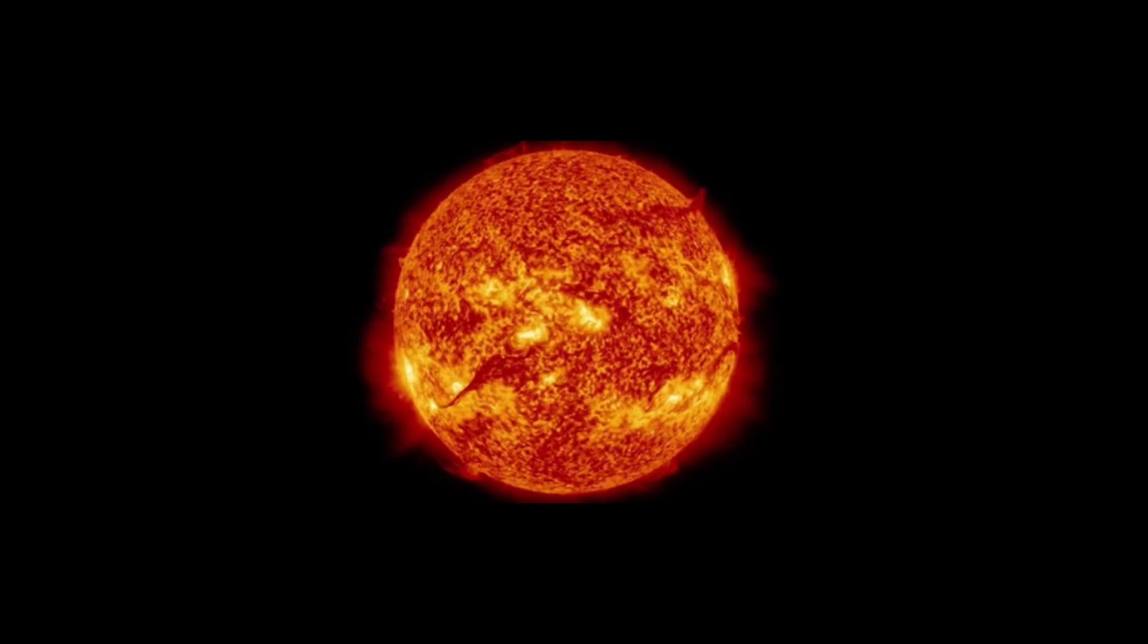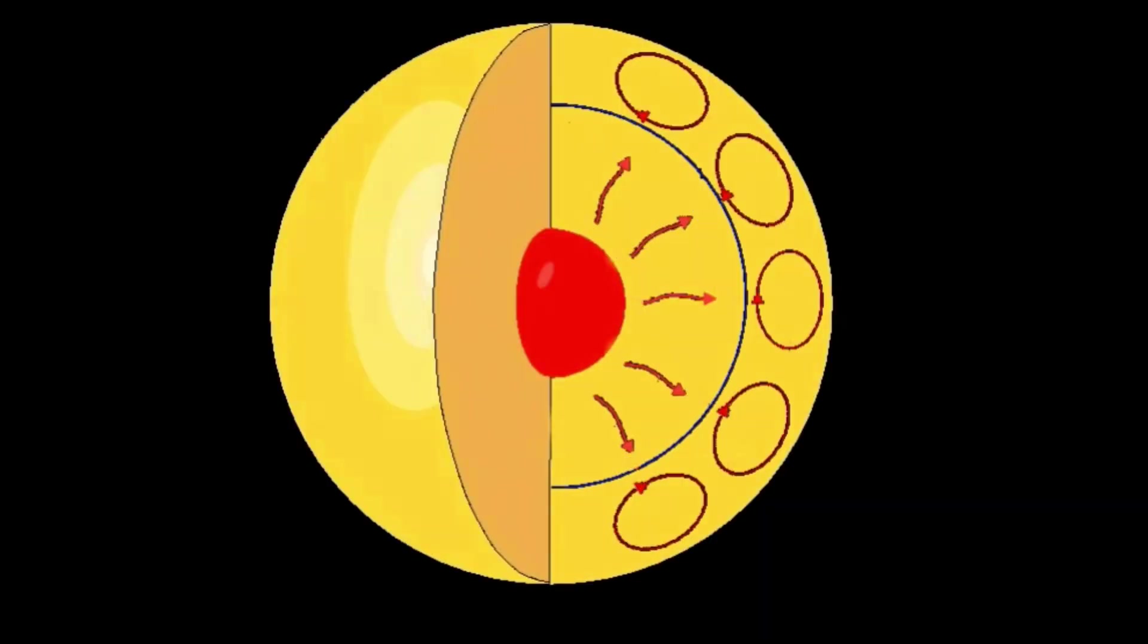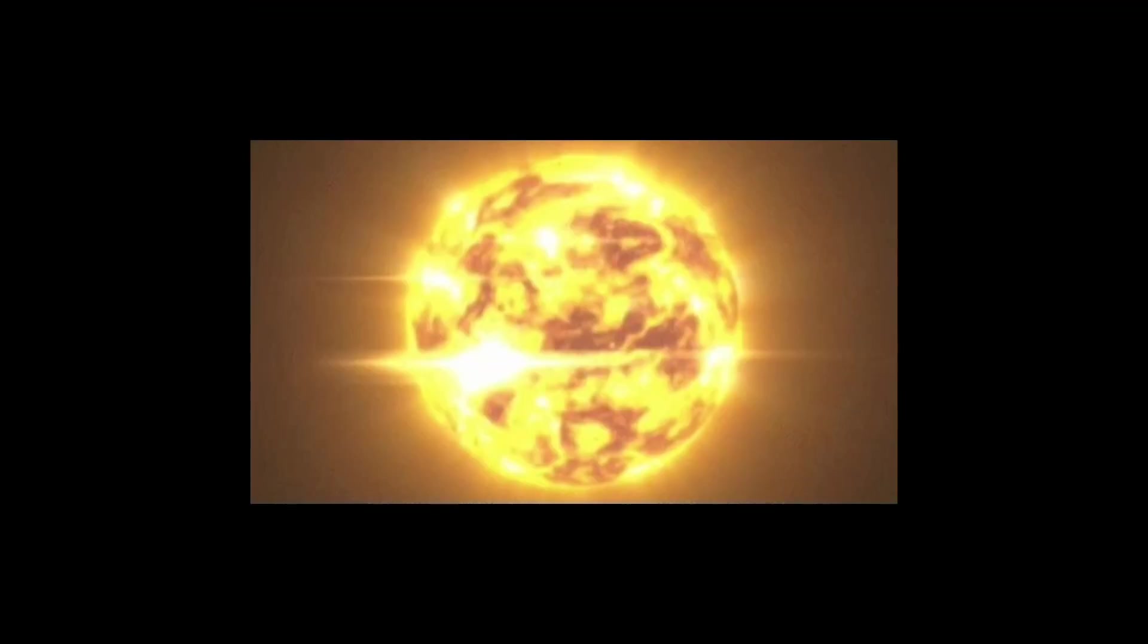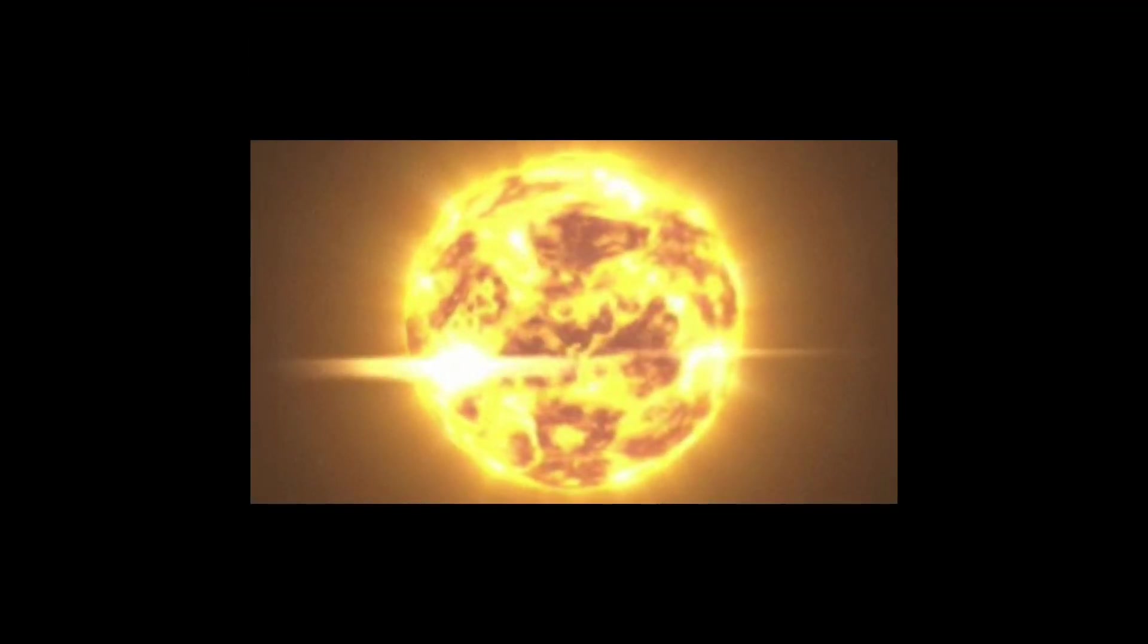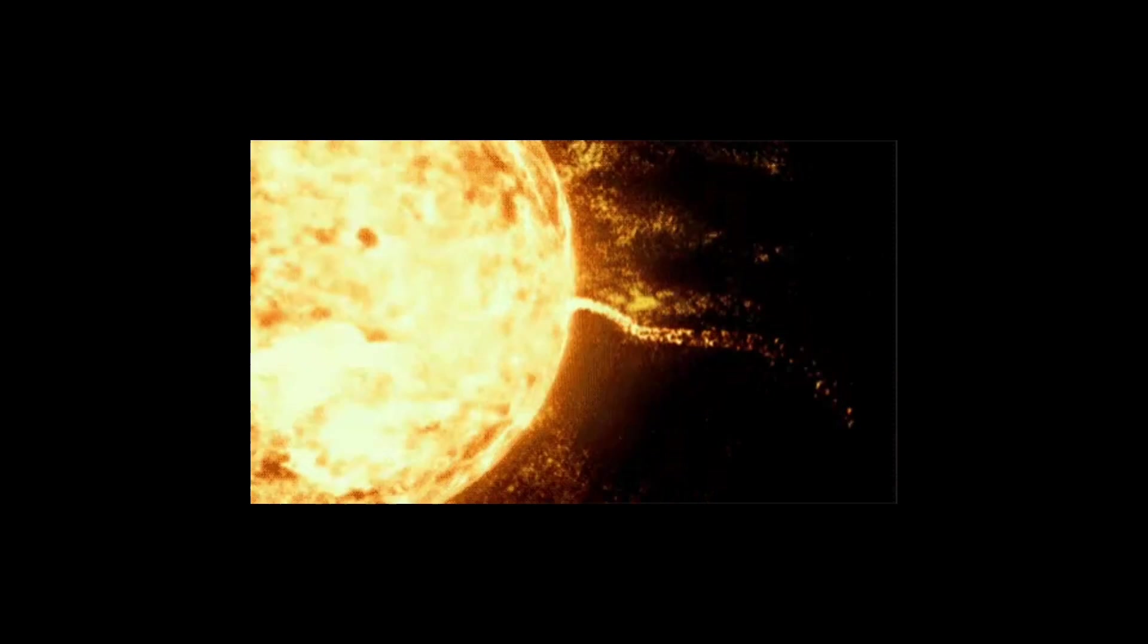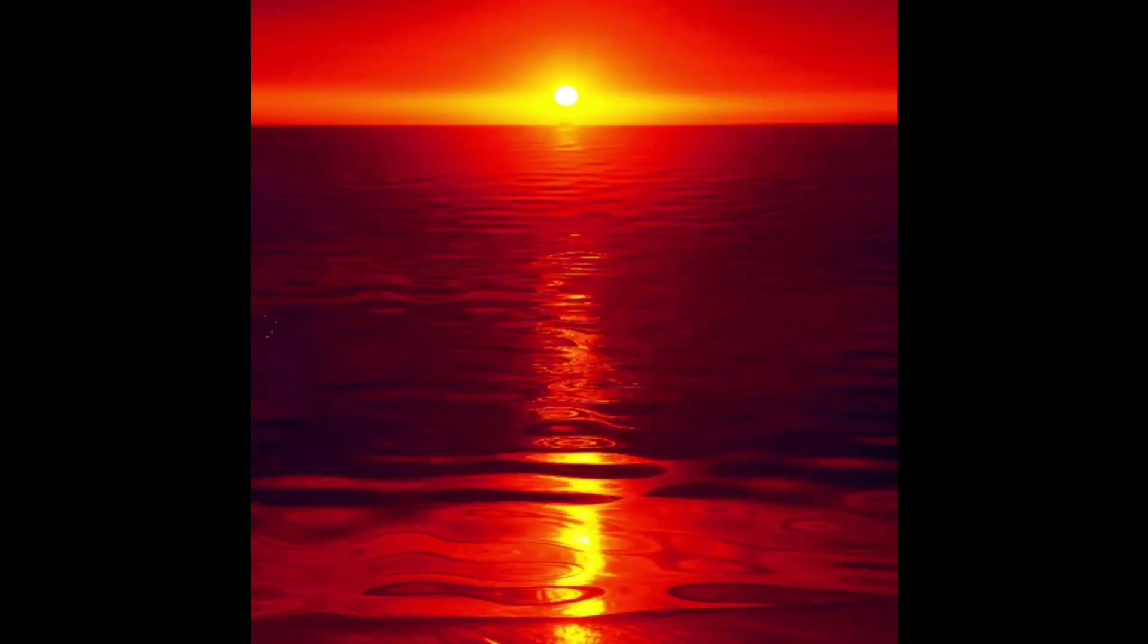Our sun mainly loses mass by nuclear fusion in its core. Fusion is changing hydrogen to helium, while the hydrogen used weighs slightly more than the helium produced. This energy comes out to be what we see as light.